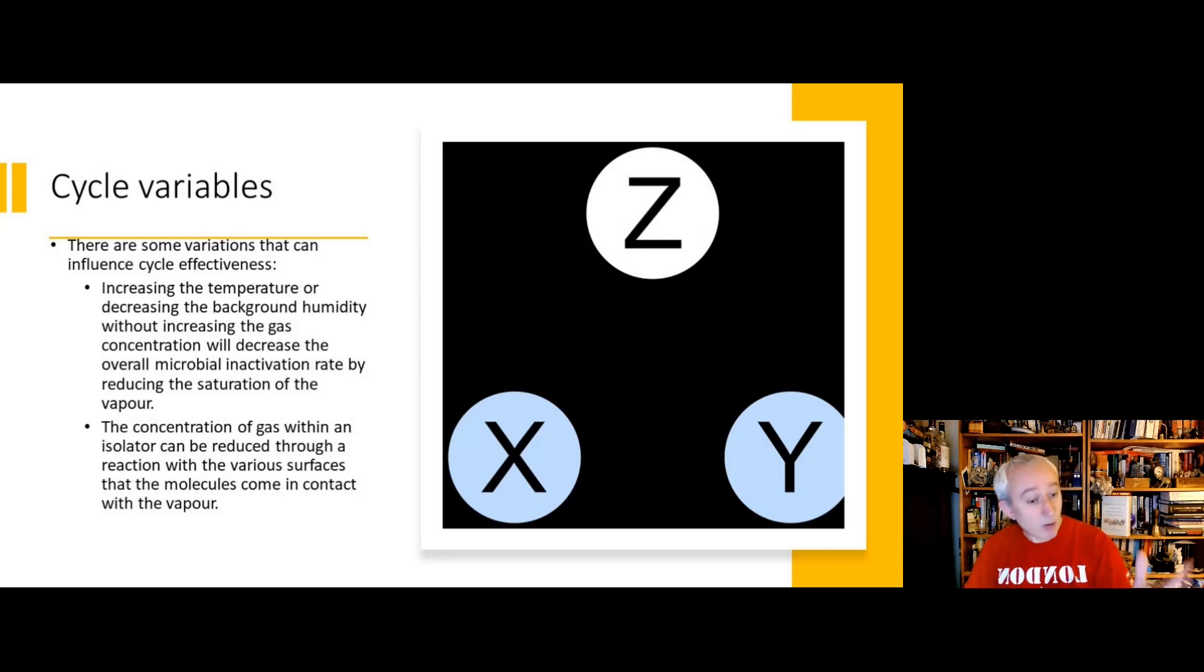Now cycles can go wrong. There are a number of variables. So if we don't get the temperature right, we don't get the humidity right, or we might need to adjust those in order to get a cycle to pass. And also sometimes the concentration of the gas can fluctuate, and we need to make sure that's consistent.